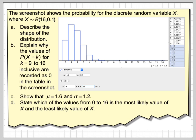Describe the shape of the distribution. Explain why the values of the probability of X equals k for k equals 9 to 16 inclusive are recorded as 0 in the table in the screenshot.